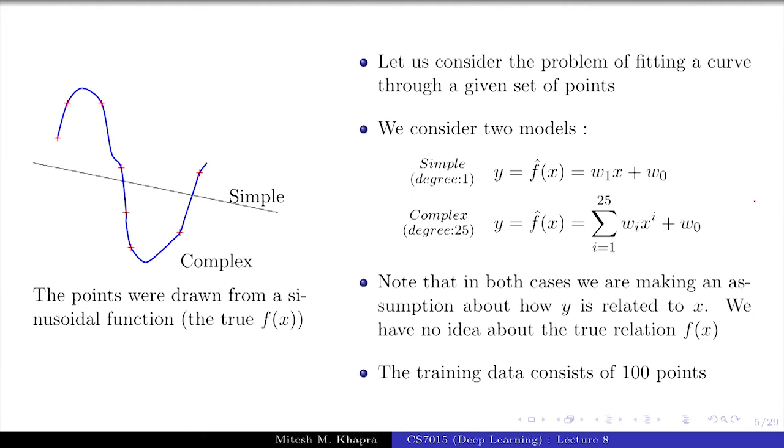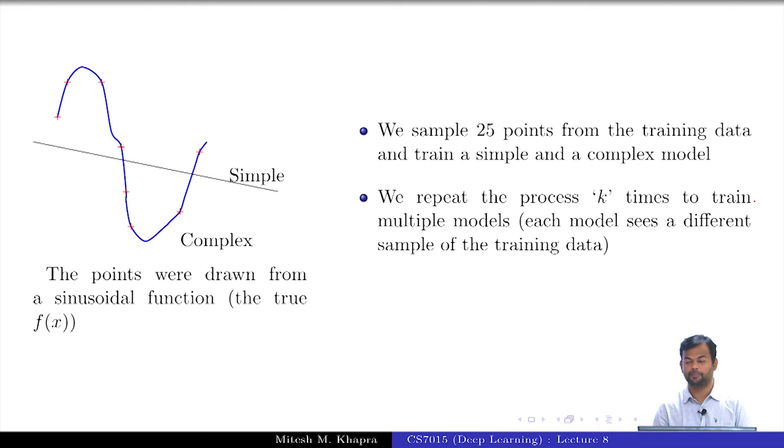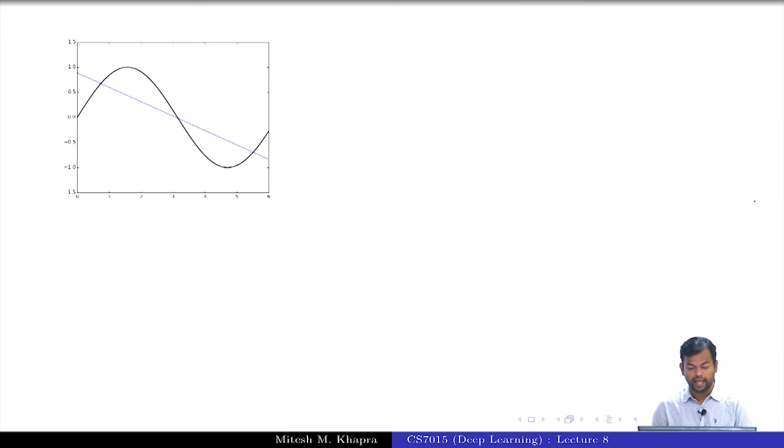The training data actually consists of 100 points, but you do not see 100 points here. What I have done is I have sampled some 25 points from here and used that as the training data. I have learned my parameters using these 25 points. Now I repeat this experiment k times. Every time I will get a different sample of 25 points and I will try to learn the parameters of the model. Will I get the same curve every time? No, my parameters would change slightly because my training data is different. I will actually draw these different functions and we will make some observations from that.